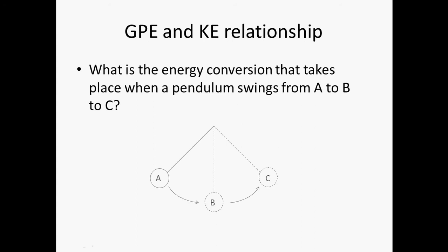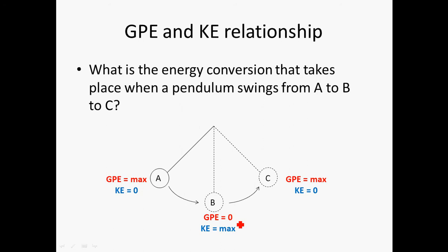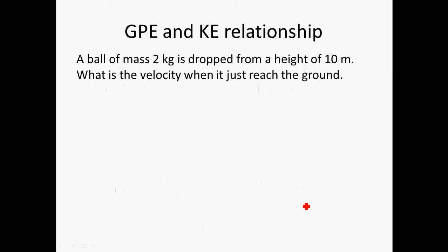Let's look at another example: a pendulum swinging from point A to point B to point C. At point A, it has maximum GPE and zero KE. When it reaches the lowest point B, all the GPE is converted to KE. When the pendulum swings back to the highest point C, the KE is reconverted back to GPE. The energy is exchanged between these two forms, but the total energy remains the same.